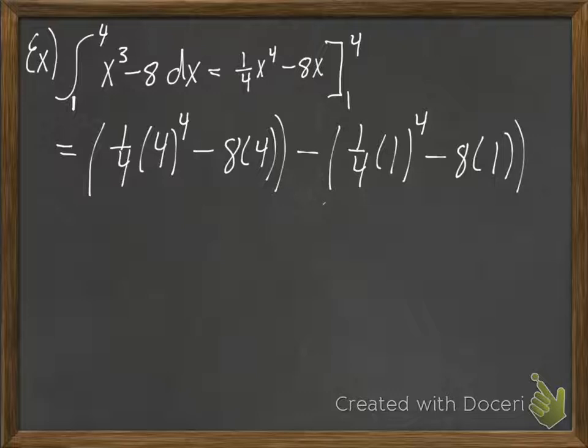And then we just go through and simplify. 1 fourth times 4 to the fourth. Well, 4 to the fourth would be 256, but we're doing 1 fourth of it. So that would just be 64. 8 times 4 would be 32. So we have 64 minus 32 would be 32. And then on the other side, we have 1 fourth minus 8. So that would be negative 7 and 3 fourths.